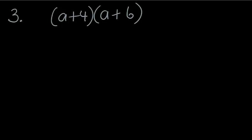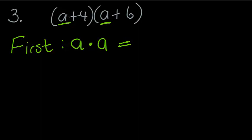Question 3 says: (a + 4)(a + 6). What we have is known as a binomial. We have two binomials in brackets. Binomial means 2, so each bracket has two terms inside, and we are multiplying a binomial by a binomial. We are going to use the FOIL method. F in FOIL stands for First — we take the first term in each bracket and multiply them. In bracket 1, the first term is a, and in bracket 2, the first term is also a. So a times a gives me a squared.